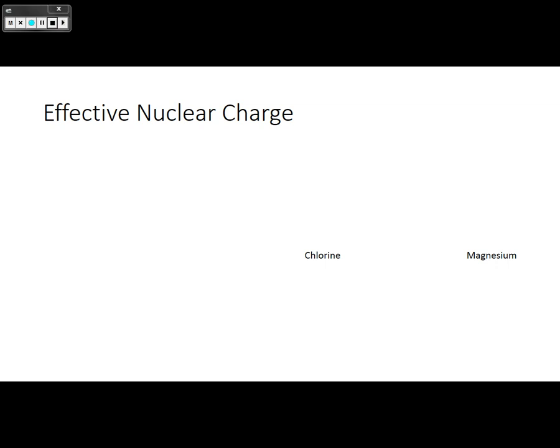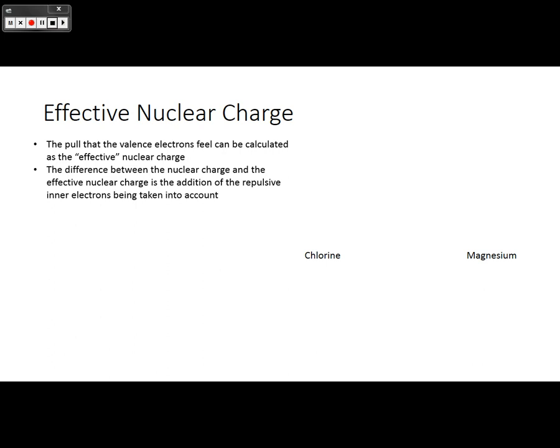The other one that we're talking about is the effective nuclear charge. And so the pull that the valence electrons feel from the nucleus can be calculated as the effective nuclear charge. The difference between the nuclear charge and the effective nuclear charge is the addition of the repulsive inner electrons being taken into account. So that whole shielding effect that we're talking about, this is kind of a way to physically calculate that.